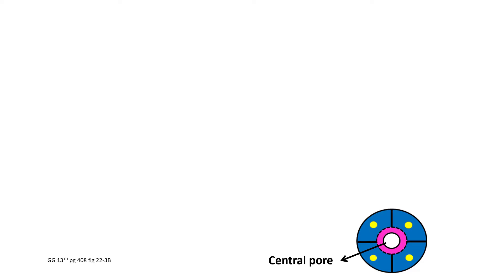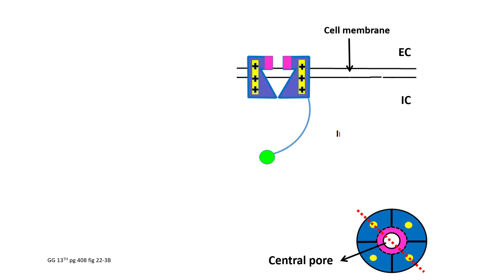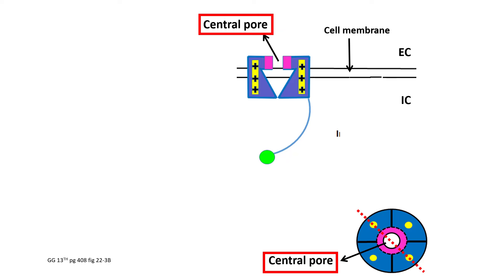What you are looking at here is a voltage-sensitive sodium channel from above. This is the central pore of the voltage-sensitive sodium channel. Now let us make a slice through the voltage-sensitive sodium channel passing through the central pore and the two yellow dots. If we slice through the voltage-sensitive sodium channel in such a manner, this is what we would get — the cut section of it embedded in the cell membrane of a skeletal muscle. Over there you see the central pore, the same central pore which you saw when looking from above.